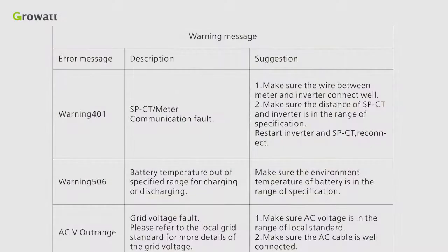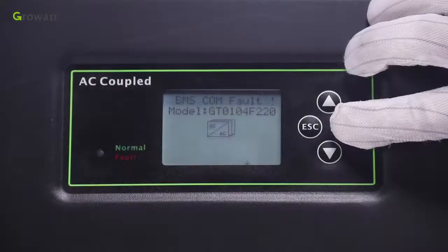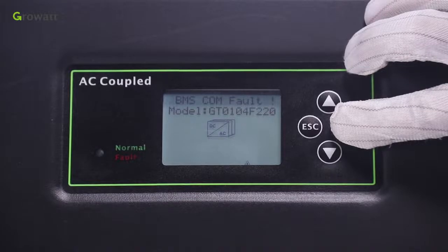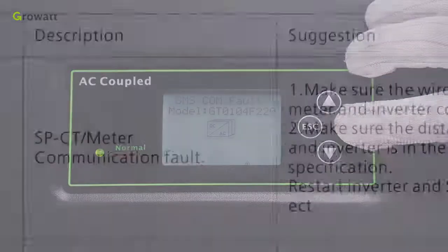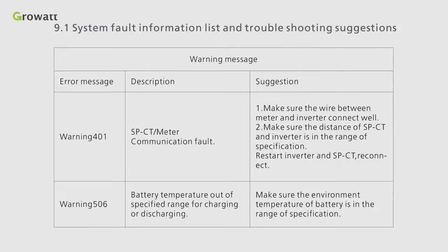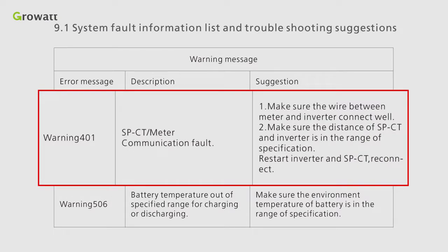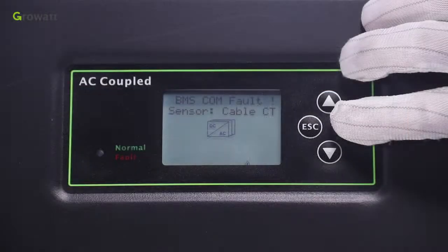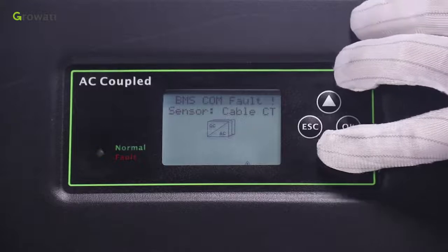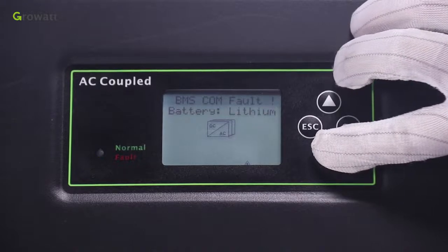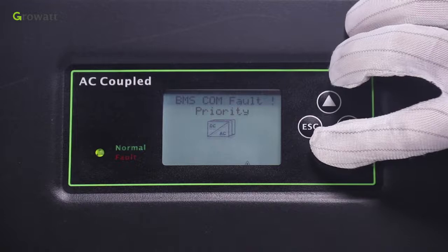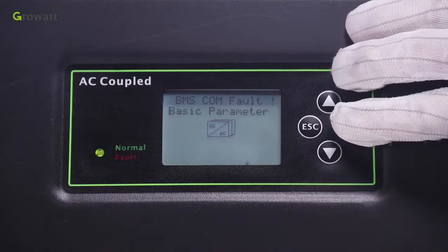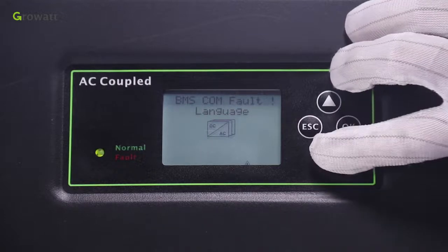There is a troubleshooting suggestion in our user manual. If the inverter gives the fault information, you can refer to the list to repair it. Such as the warning message is 401. It refers to that the CT meter communication is wrong. You can check the wire connection and distance between the device. Then restart the machine. If there is something you cannot deal with, please contact GrowWatt server center.